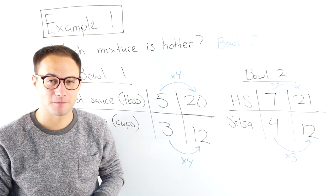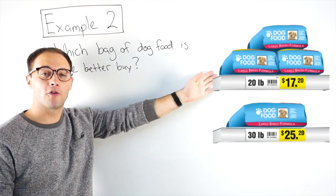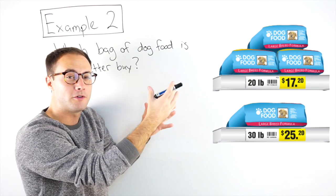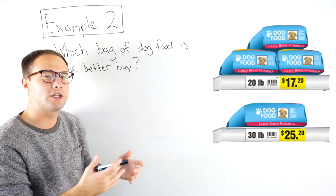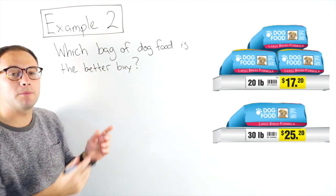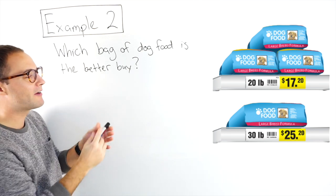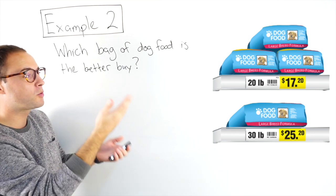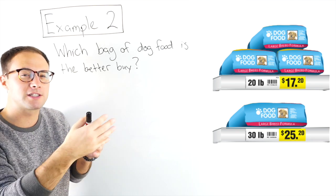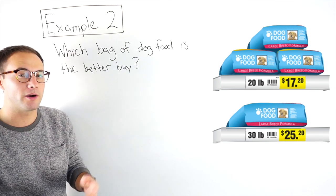Let's try another example. Example two, which bag of dog food is the better buy? We see two different amounts of dog food for two different prices. We have a 20 pound bag of dog food for $17.20. We also have a 30 pound bag for $25.20. Now obviously the 30 pound bag is going to be more expensive, but that doesn't necessarily mean it's the better buy.